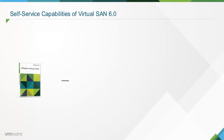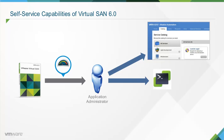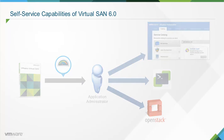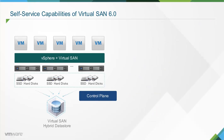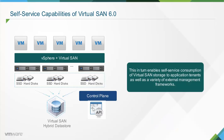Virtual SAN 6.0 provides self-service capability to application administrators by enabling them to integrate with cloud automation tools such as vRealize Automation, PowerCLI, and OpenStack. The control plane, which is programmable through public APIs, is used to consume and control policies via scripting and cloud automation tools. This enables self-service consumption of Virtual SAN storage to application tenants as well as a variety of external management frameworks.